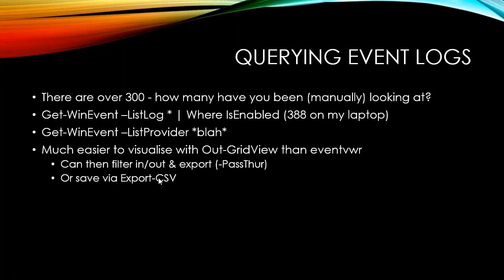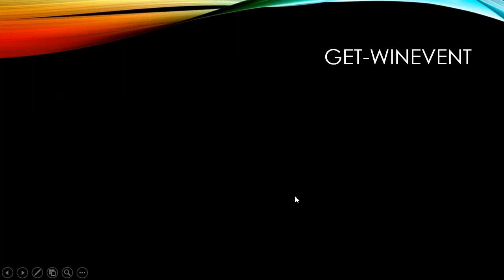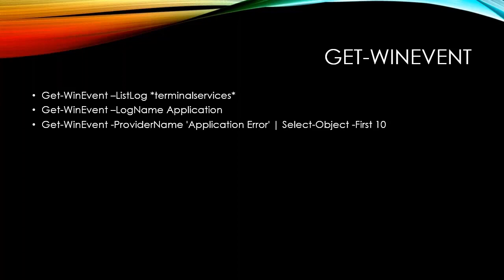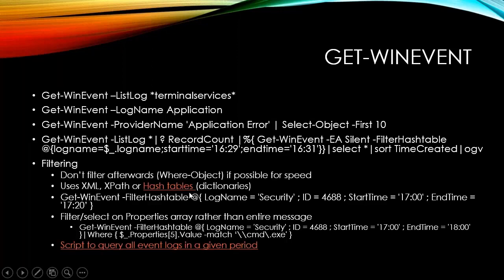We can also remote this — get-winevent takes a ComputerName argument, so I don't need to log on to machines. I can pull data from multiple machines — say 10 XenApp servers — for a particular period. I'm using Select there to see the most recent 10 application errors from the event log. In the slide deck, you can copy and paste that command, changing the times as needed. Filtering uses hashtables or dictionaries if you know them from other languages — easy to construct.